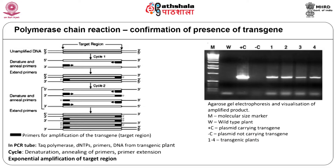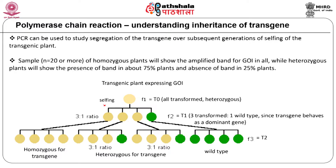The polymerase chain reaction is used to study the presence of transgene in transformed plants. This is required because so far the presence of transgene had only been deduced using selection and screenable markers. Primers specific to the transgene are used to amplify the transgene integrated into the plant genomic DNA. The amplified product is visualized after electrophoresis on agarose gel. Wild type plant and plasmid without the transgene are used as negative controls. Putative transgenic plants showing an amplified band indicate the presence of the transgene.